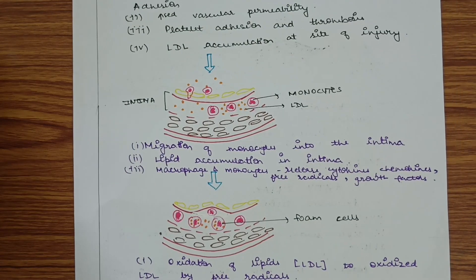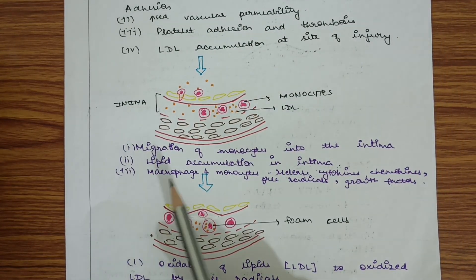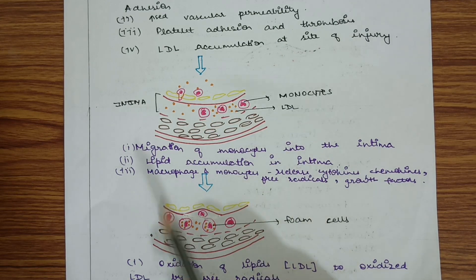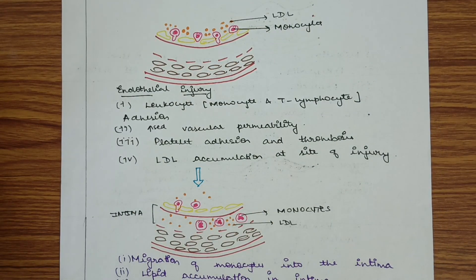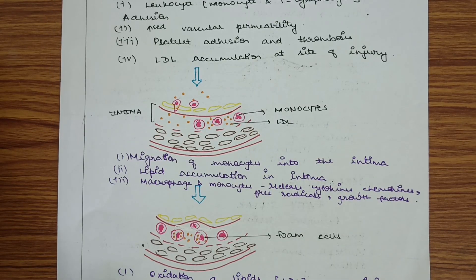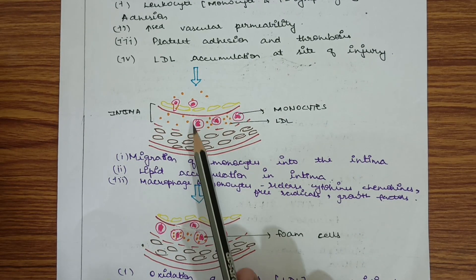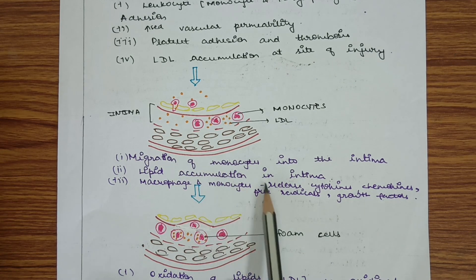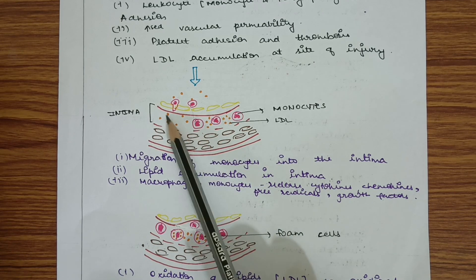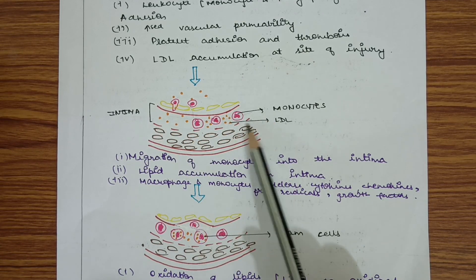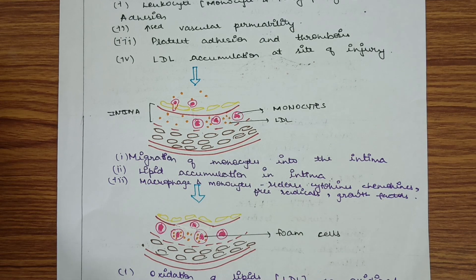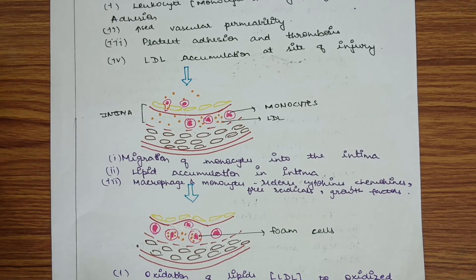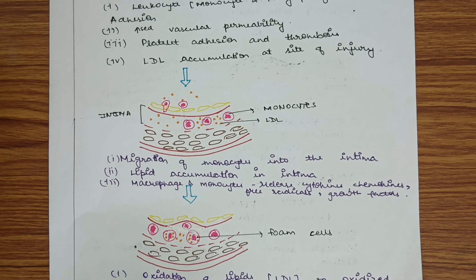After this adhesion, monocytes and T-lymphocytes migrate into the intima due to increased vascular permeability. There will also be lipid accumulation in the intima as lipid enters the tunica intima. Macrophages and monocytes in the intima release cytokines, chemokines, free radicals, and growth factors, which further lead to chronic endothelial injury.